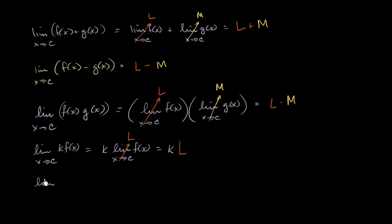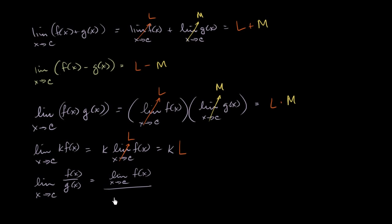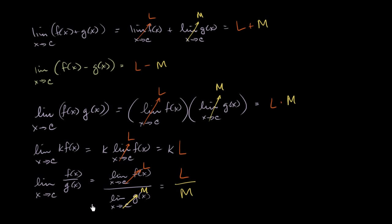If we have the limit as x approaches c of f of x divided by g of x, this is the exact same thing as the limit of f of x as x approaches c divided by the limit of g of x as x approaches c, which is equal to L over M. This is sometimes called the quotient property.